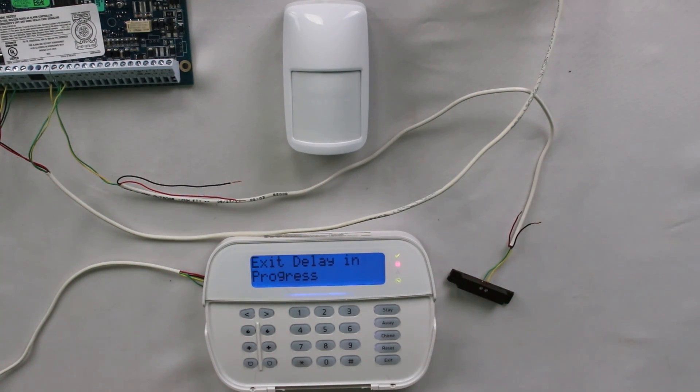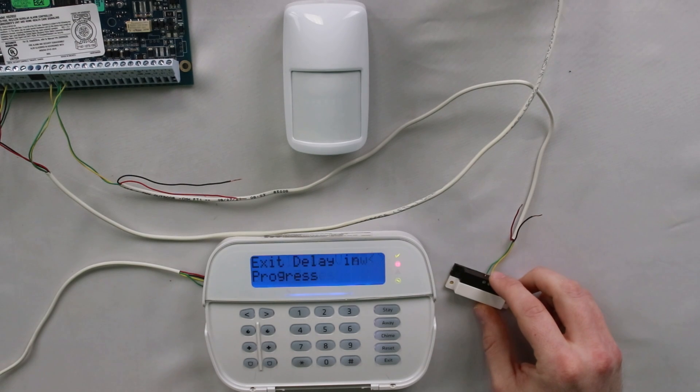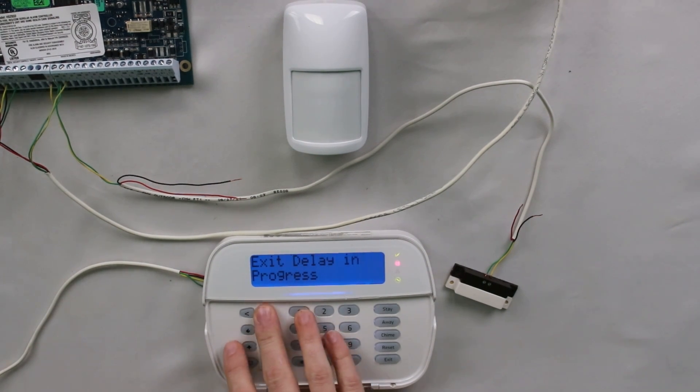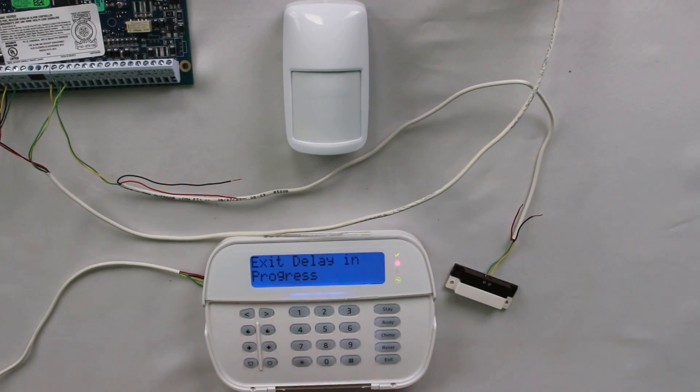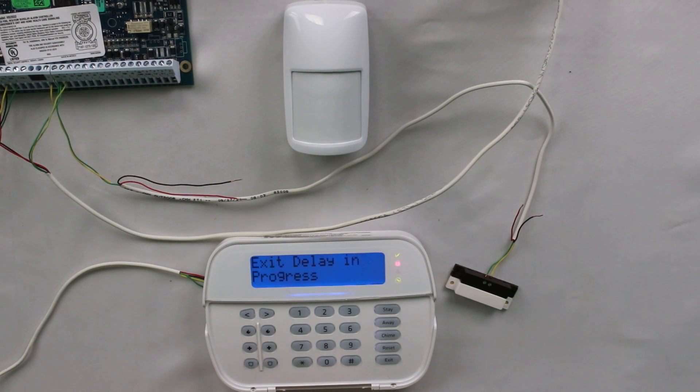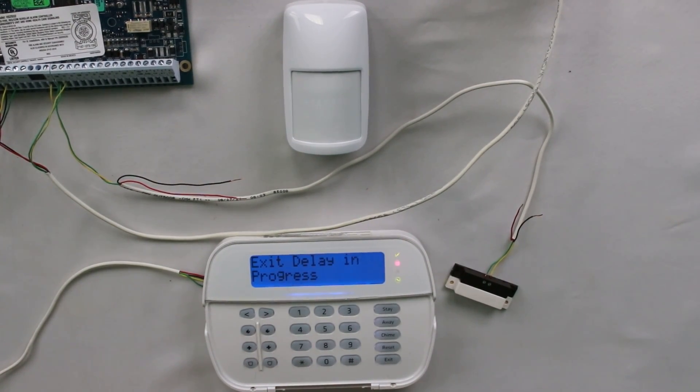Now, if I open this front door and close it, that tells the system, hey, somebody left the house. It's cool to arm in away mode. I can turn on all my sensors. So now if we scroll through, it doesn't show the bypass active anymore because it's no longer going to bypass those zones.